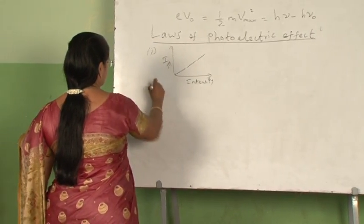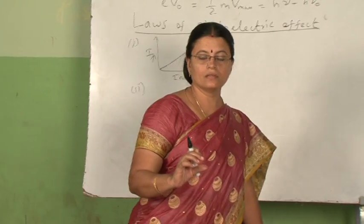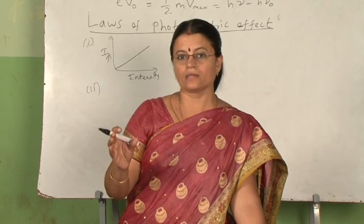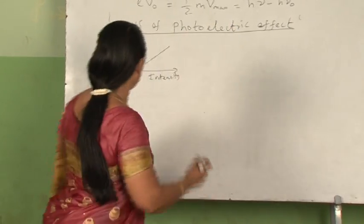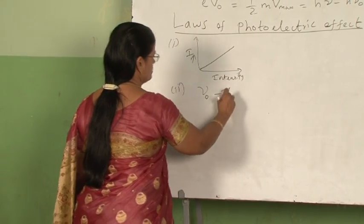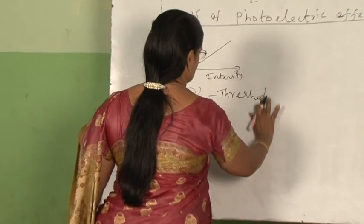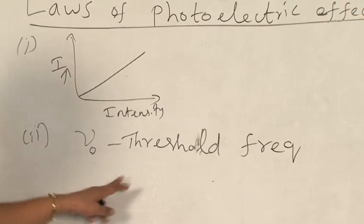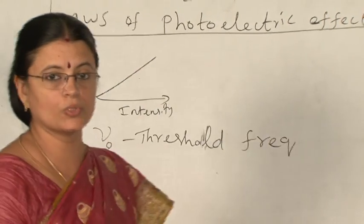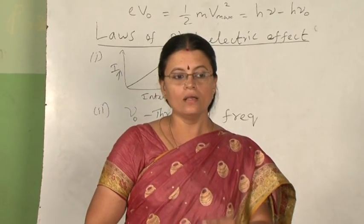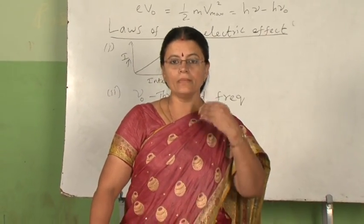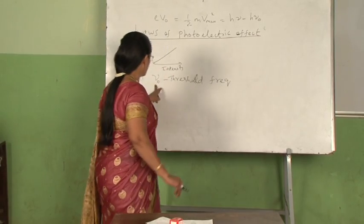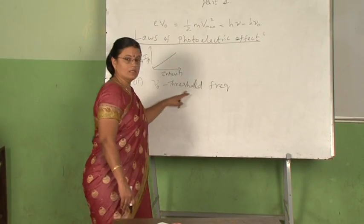The second law states that for a given metal surface and for a given intensity, there exists a minimum frequency called threshold frequency, below which no photoelectric emission will take place. That means the incident photons should have a minimum required energy so that the work function can be overcome, plus some energy can be imparted to the photoelectrons so that they can come out of the metal surface. Therefore, the threshold frequency is related to the second law.